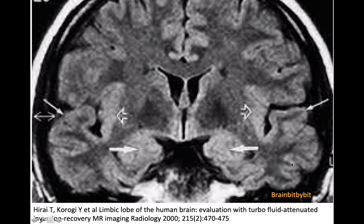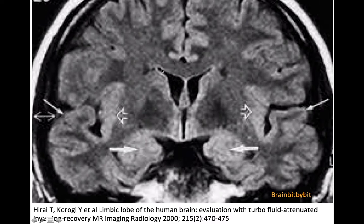In 2008, I attended a very interesting lecture by a Swiss radiologist named Valavanis, who talked about the evolution of the brain and how structures on the inside of the brain are phylogenetically older, and therefore have a higher water content and higher signal on FLAIR images. He named these limbic structures the old brain.